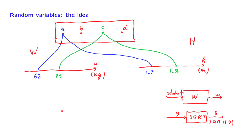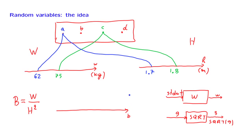Given some random variables, we can create new random variables as functions of the original random variables. For example, consider the quantity defined as weight divided by height squared. This quantity is the so-called body mass index, and it is also a function on the sample space. Once an outcome of the experiment is determined — suppose that the outcome was the blue student — then the numbers 62 and 1.7 are also determined. Using those numbers, we can carry out this calculation and find the body mass index of that particular student, which in this case would be 21.5.